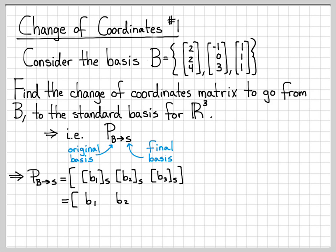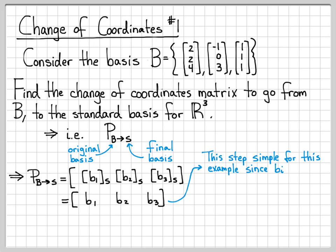For this particular problem, since we're going from a basis B to the standard basis, this part of the problem is almost trivial, because we were already given the vectors B1, B2, and B3 written in terms of the standard basis. So this problem is kind of easy — we'll do a more complicated one in the next example. This step is actually really simple because the Bi's are already written in terms of the final basis.